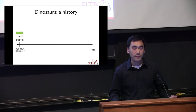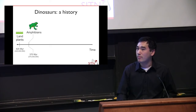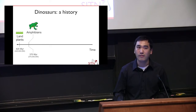Fast forward about 50 million years and you get your first animals on land. These are the amphibians — things like frogs, toads, that sort of thing — that can live on both land and water. They come to be able to take advantage of the food offered on the land by the plants that have colonized it.